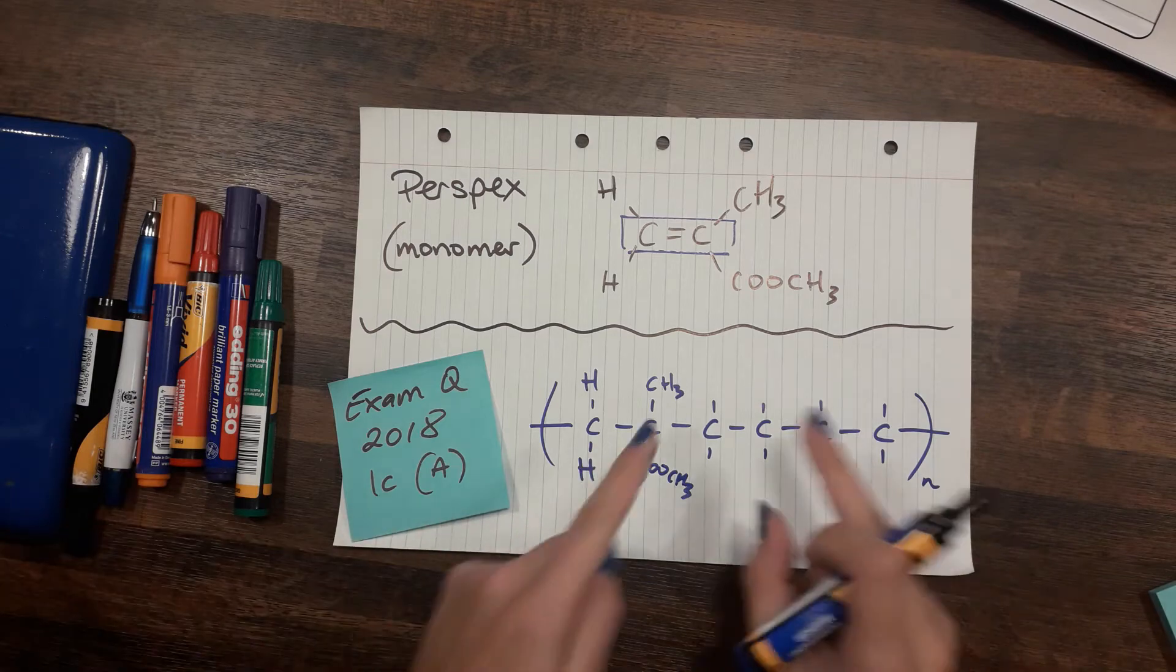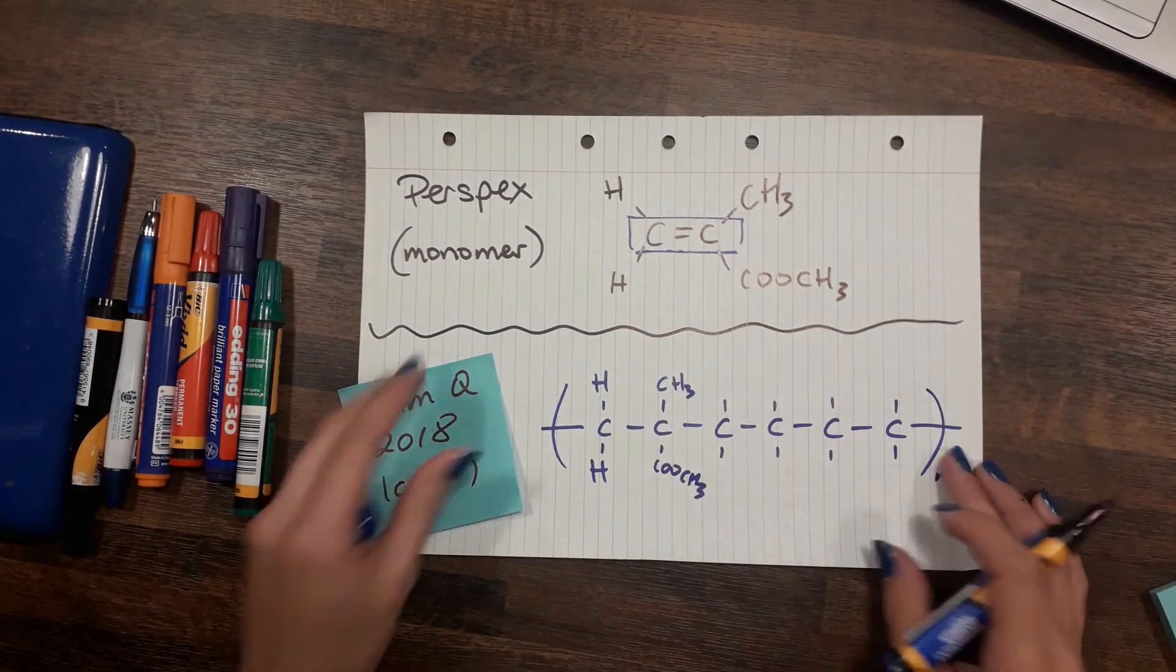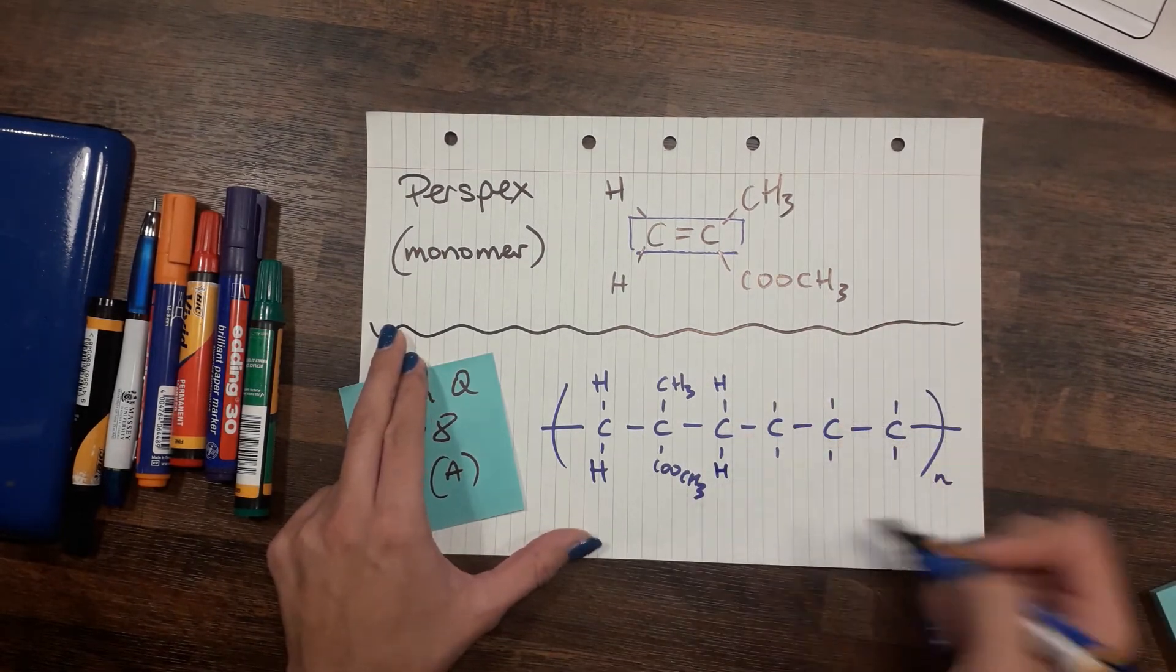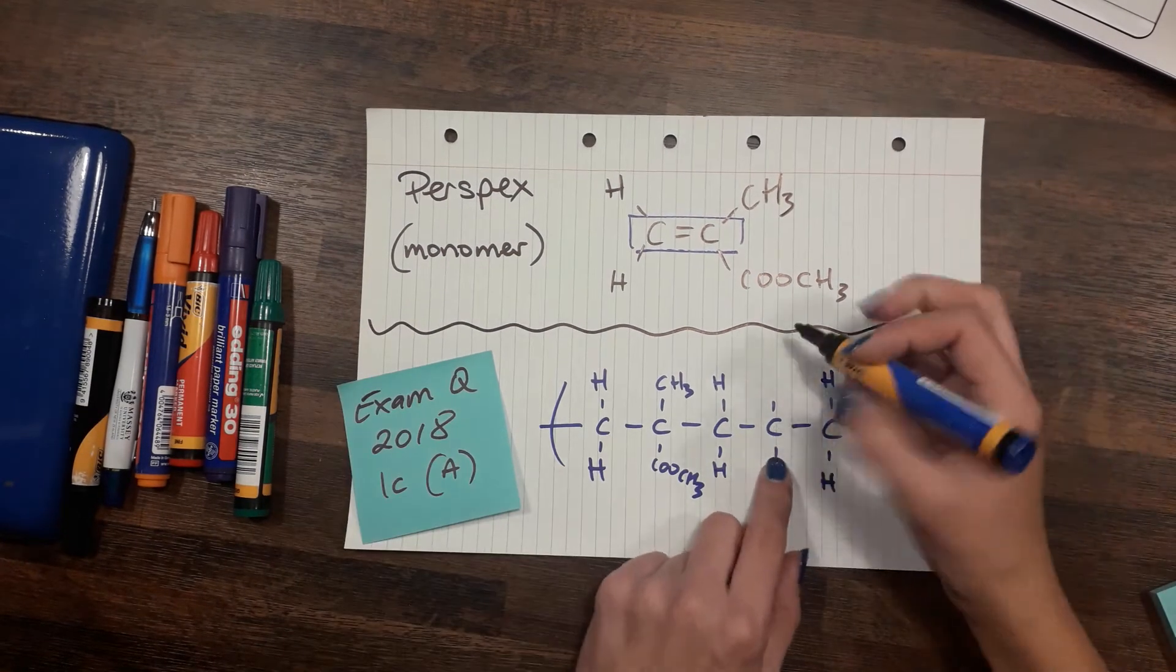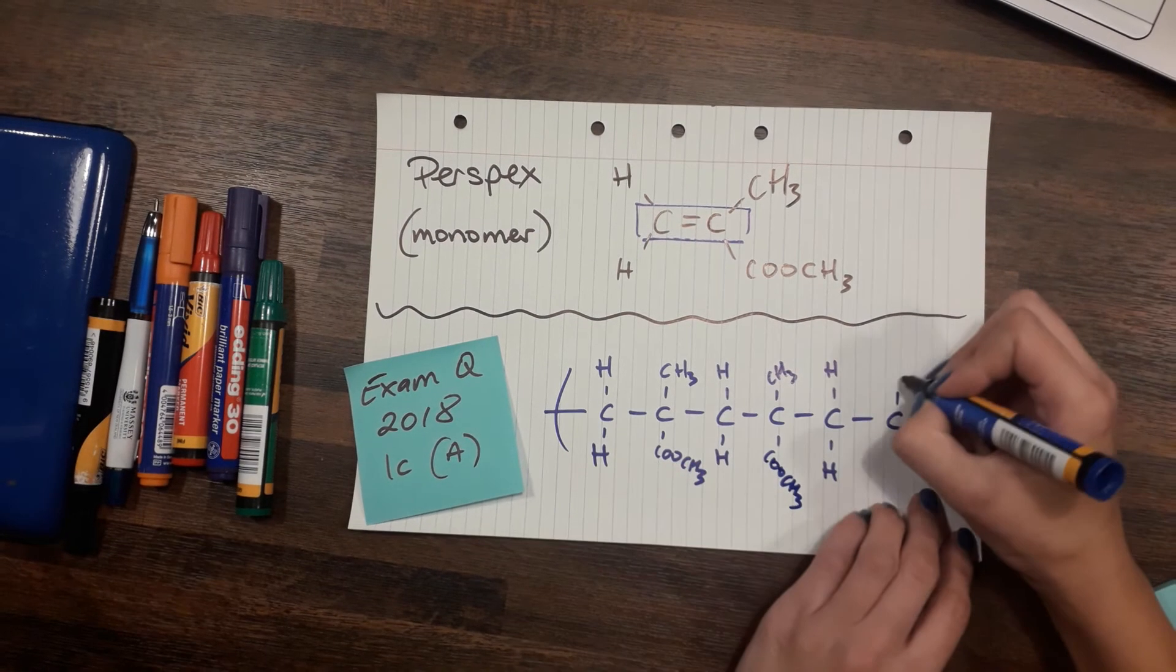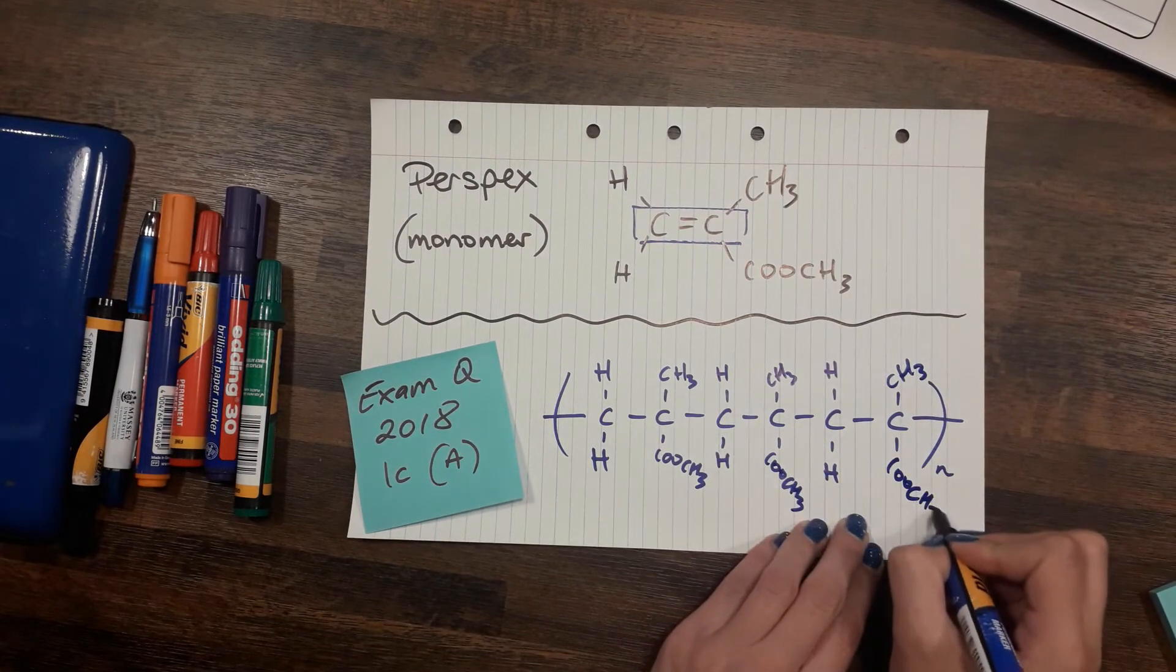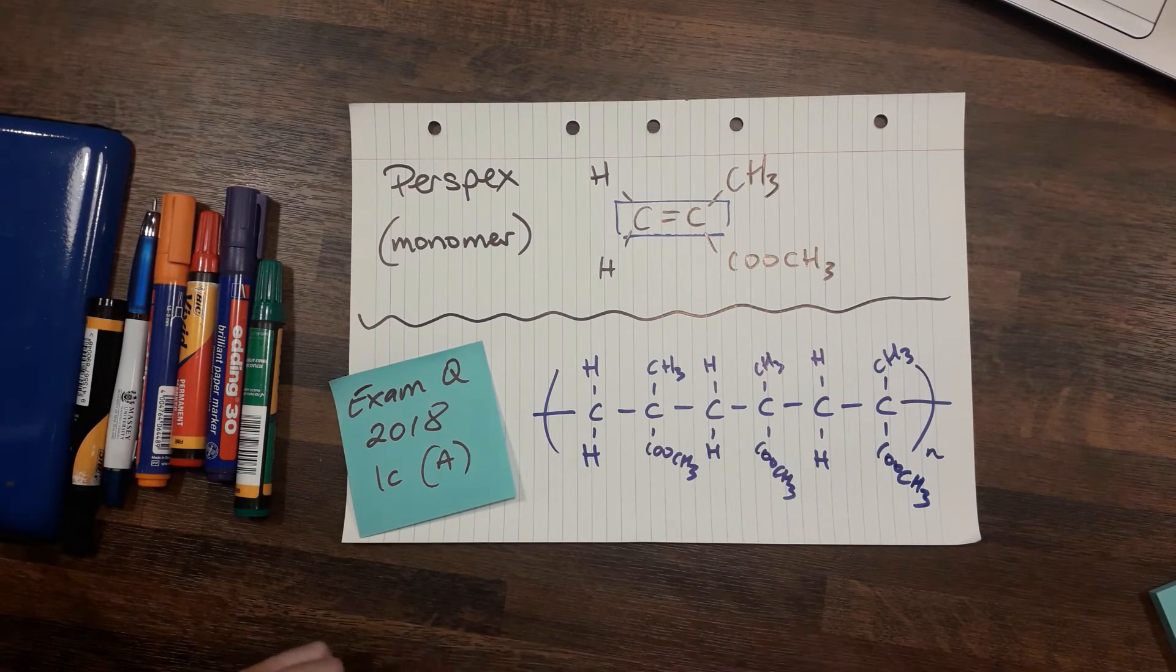And then you're just going to keep going, because this would be the second unit of a polymer. So again, we'd go back to carbon number one, HH. So you find that every second carbon could have these hydrogens on it, and every second carbon could have that CH3, COOCH3 group coming off it. Just like that. And that gives you an achieve point. Well done.